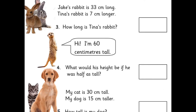More measuring ones. Jake's rabbit is 33 centimetres long. Tina's rabbit is 7 centimetres longer. So that's adding: 33 add 7. You can count that one on your fingers — put the big number in your head and then count on 7.